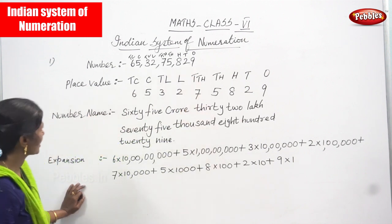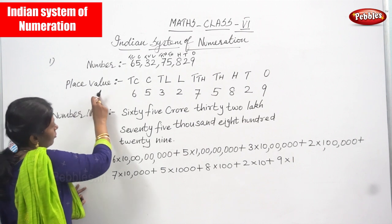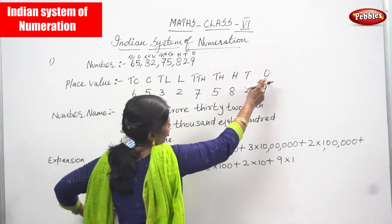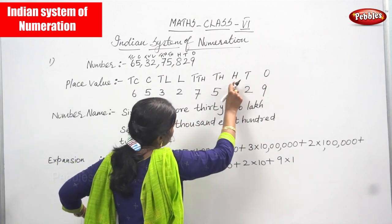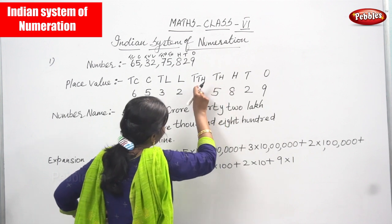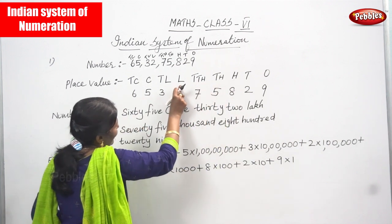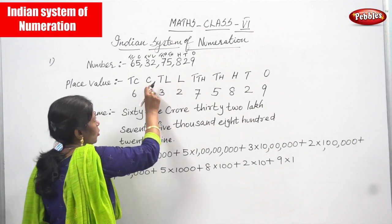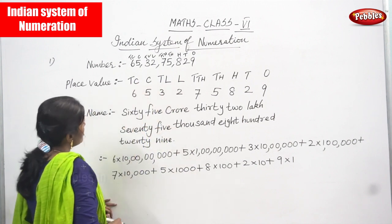Starting from ones: ones, tens, hundred, thousand, TTH ten thousand, L lakhs, TL ten lakhs, C crore and TC ten crore.